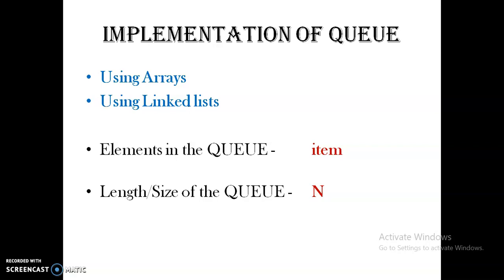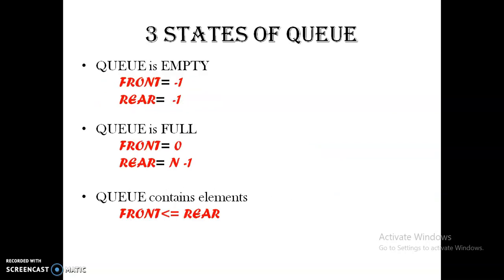The implementation of a queue can be done using two methods: using arrays or using a linked list. Here we are following the array implementation. The element in the queue is named 'item' and the maximum size it can hold is represented using capital N. There are three states of a queue.